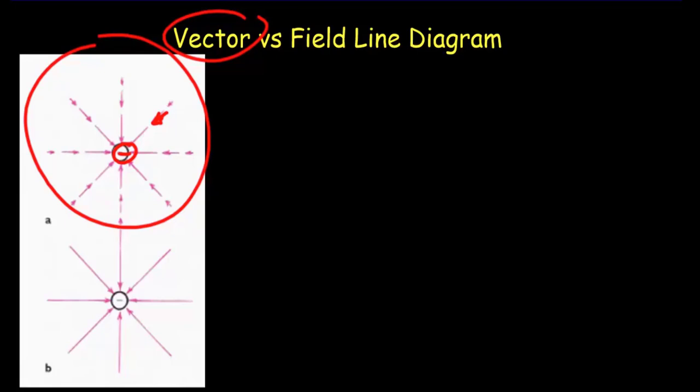We can represent that as a vector because electric field is a vector. So wherever we place our positive test charge, there would be an electric field vector there. The closer you are to that charge, the bigger the vector will be. We don't usually use the vector representation because these vectors start crossing each other and our diagrams become hopelessly confusing. What we prefer to use is a field line diagram, which doesn't give us quite as much detail but gives a nice overall picture of what's going on.